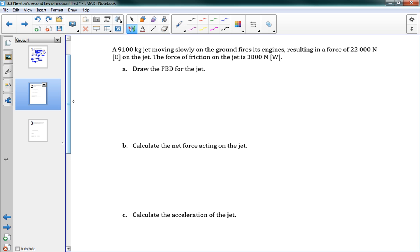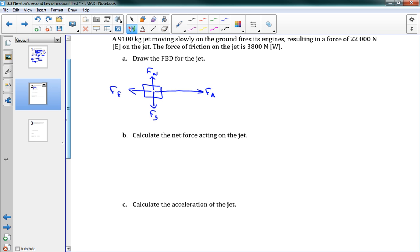On our second page here, we've got another problem. A 9100 kilogram jet moving slowly on the ground fires its engines, resulting in a force of 22,000 newtons east on the jet. The force of friction is 3800 newtons west. Now we have two forces on our object. So we need a free body diagram. We probably have gravity on this jet. And it's moving on the ground, so we have normal force still. Then it says we have 22,000 newtons east. This is going to be some applied force from the engines. And we have some friction here, 3800 newtons west. So we'll just call that friction for now. There's our free body diagram.